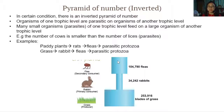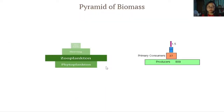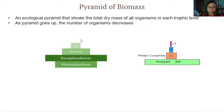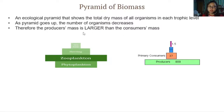That covers the first type of ecological pyramid. Now the second type is the pyramid of biomass, which shows the total dry mass of all organisms in each trophic level. As the pyramid goes up, the number of organisms decreases and therefore the producer's mass will be larger than the consumers' mass.